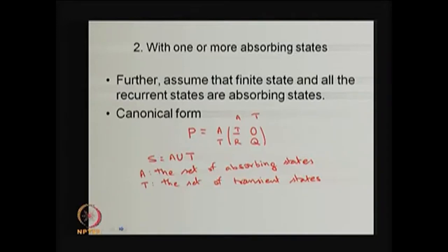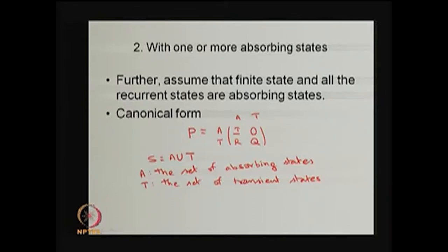For that I am making a further assumption: the state space is going to be finite. With that I am making a canonical form. The canonical form consists of all the absorbing states, which I label as A, and all the transient states as T. Therefore, the state space S is A union T. In the canonical form I collect all the absorbing states in the first few rows and then the remaining will be all the transient states.